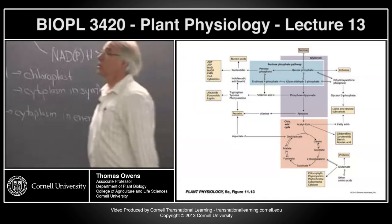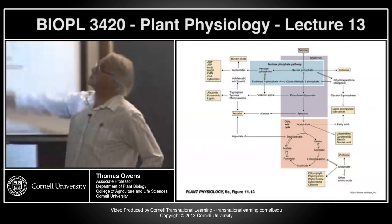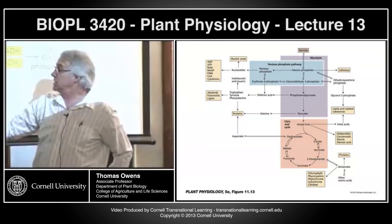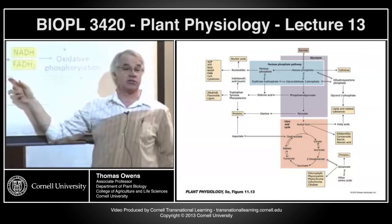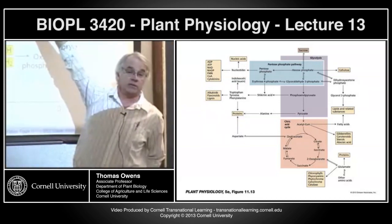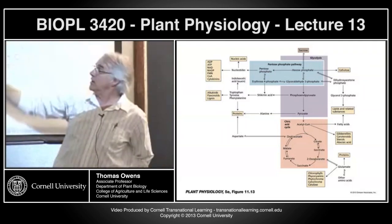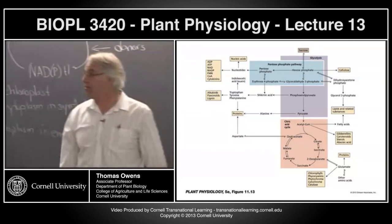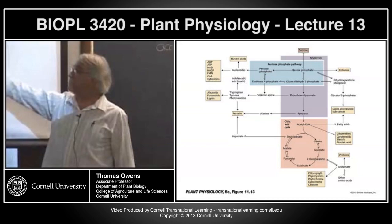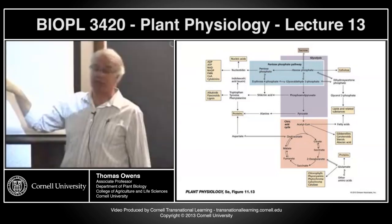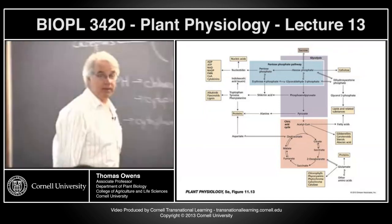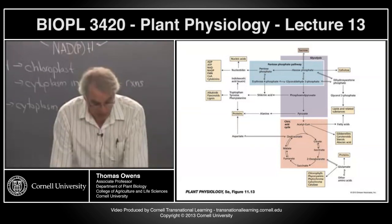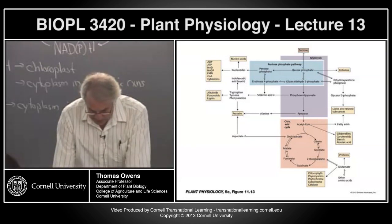The main pathway for carbon, starting off with either sucrose or triose phosphate, is through glycolysis and the citric acid cycle. All the carbon that comes in — in sucrose, glucose, or triose phosphate — comes out of the citric acid cycle as carbon dioxide. All the reductant produced, all the NADH, goes into electron transport, which is ultimately used to make ATP. That's the big picture.